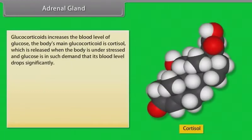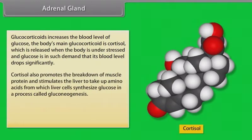Glucocorticoids increase the blood level of glucose. The body's main glucocorticoid is cortisol, which is released when the body is under stress and blood glucose levels drop significantly. Cortisol also promotes the breakdown of muscle protein and stimulates the liver to take up amino acids, from which liver cells synthesize glucose in a process called gluconeogenesis.